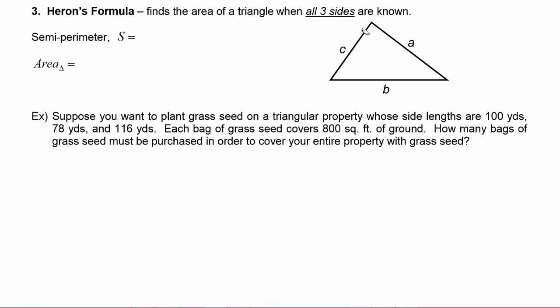Heron's formula uses a special number, S, which stands for semi-perimeter. Semi, as you may know, means half. So semi-perimeter is just half the perimeter. To find S we would just do A plus B plus C and divide it by two.